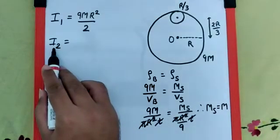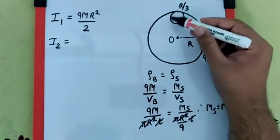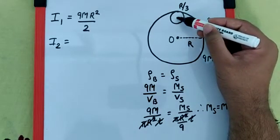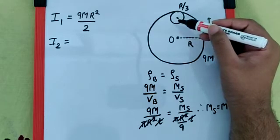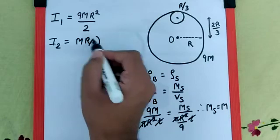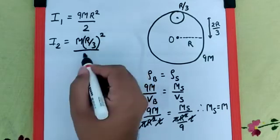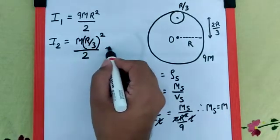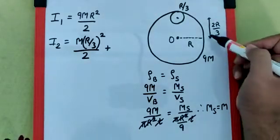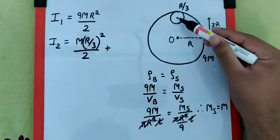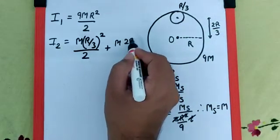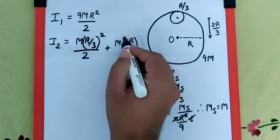That means the moment of inertia of this smaller disk about an axis passing through its center and perpendicular to the plane, which we can call Ic, is going to be m(r/3)²/2. Plus, we need to have mh², where h is 2r/3, the distance between the two parallel axes. So it is m(2r/3)².